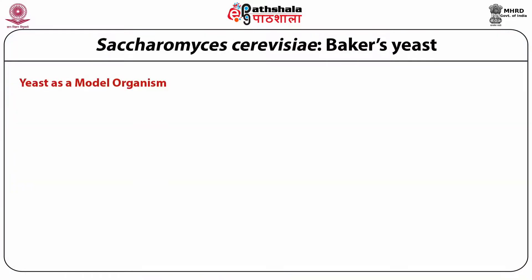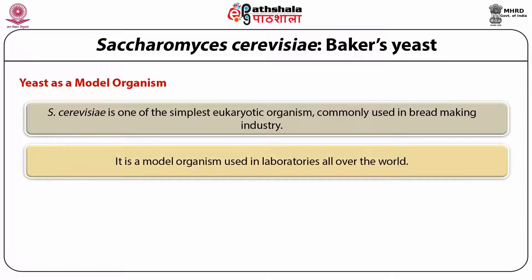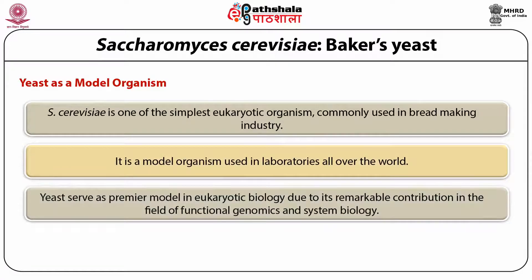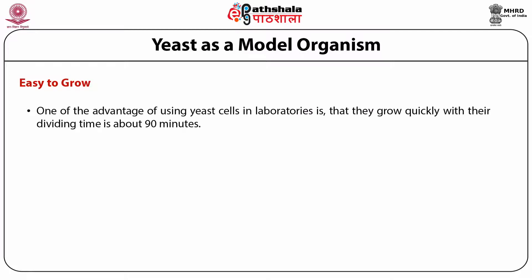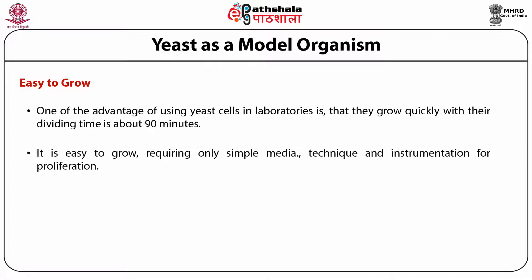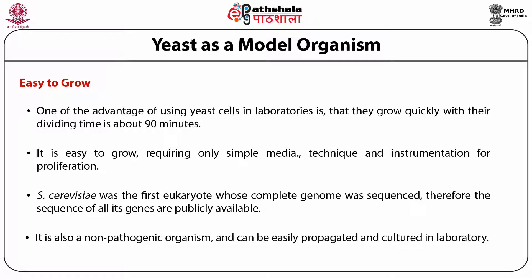S. cerevisiae is one of the simplest eukaryotic organisms, commonly used in the bread-making industry and as a model organism in laboratories worldwide. Yeast serves as a premium model in eukaryotic biology due to its remarkable contribution to functional genomics and systems biology. Yeast and humans share significant similarity in fundamental pathways including cell cycle, protein folding, and cell metabolism. Yeast cells grow quickly with a dividing time of about 90 minutes, requiring only simple media and instrumentation. S. cerevisiae is also a non-pathogenic organism easily propagated and cultured in the laboratory.